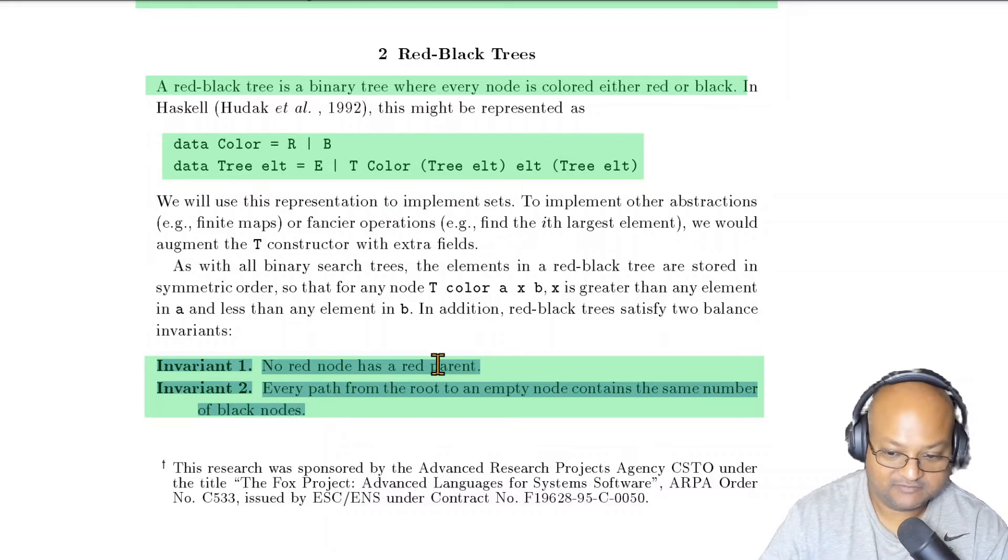A red node cannot have a red parent, and every path from the root to an empty node, in other words to a leaf, contains the same number of black nodes. And this is the invariant which keeps the tree as a whole roughly balanced and ensures that you get order log n lookup time.